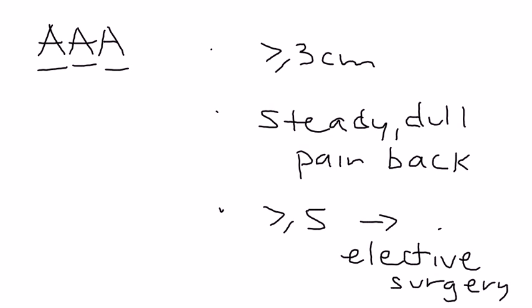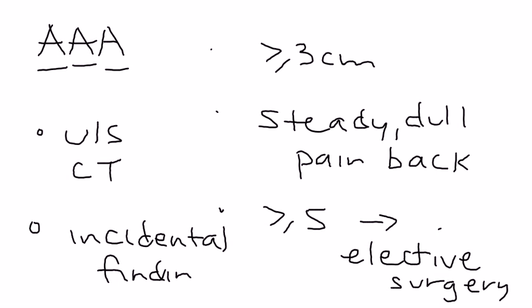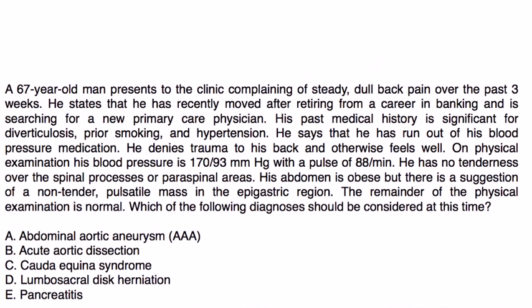Some of the more important bullet points for AAA is the diagnosis is done either with a CT or an ultrasound. And one other thing to remember is that this is sometimes an incidental finding, meaning there's no symptoms. Because there's no symptoms, it's just caught by accident during some routine imaging. So let's look at some vignettes and see what this looks like as a patient presentation.